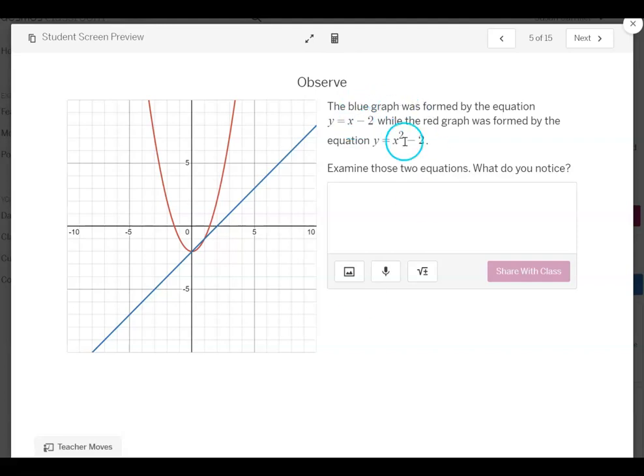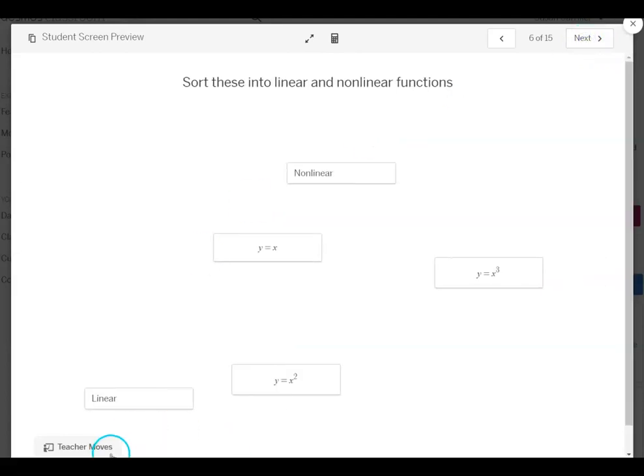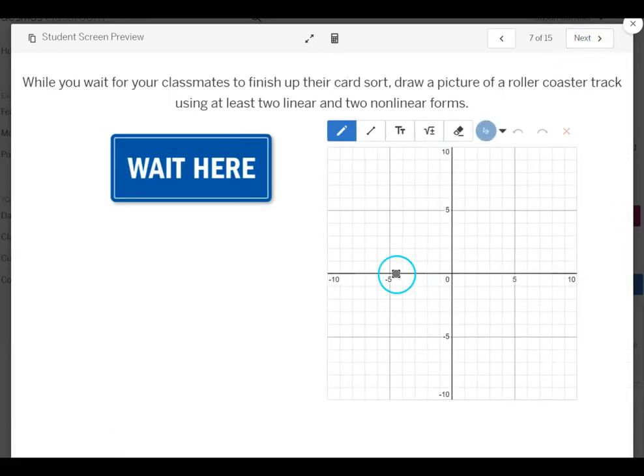And here is the same two functions again. What do you notice about these equations? You're given the equations now. So we're going to analyze the equations and see what it is about them that creates a linear function or a nonlinear function. You'll have teacher moves down here so be sure to read through those before you do the activity. On this one you'll sort these into linear nonlinear. This is a real quick check. And then here while they're waiting for the others to catch up they can draw a roller coaster with two linear and two nonlinear forms in the roller coaster. An opportunity to be creative so this would be eligible for their portfolio.